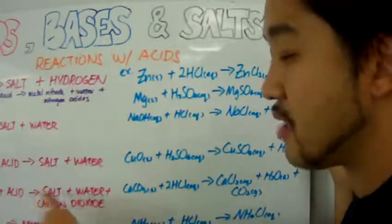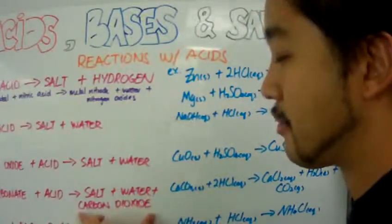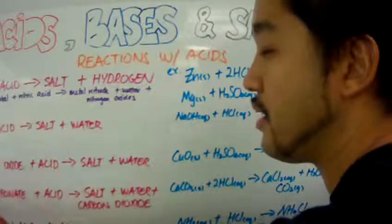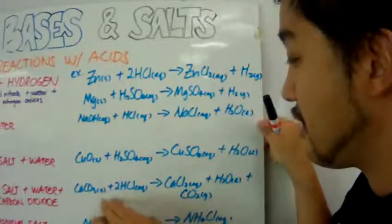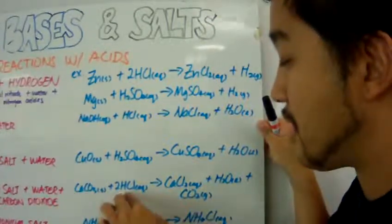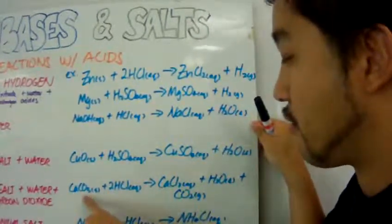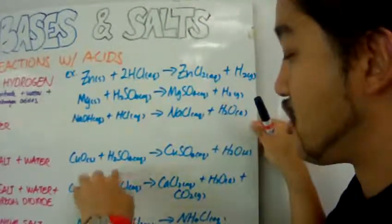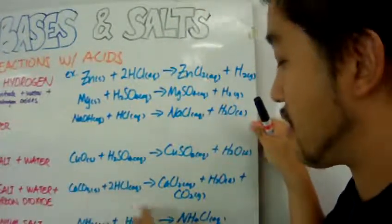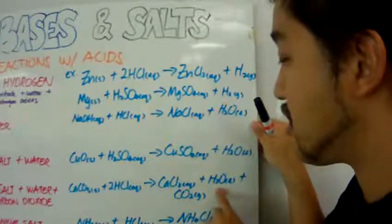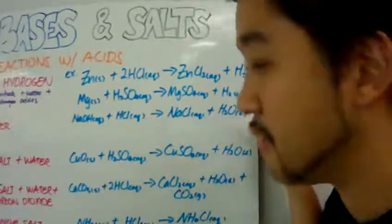Metal carbonate with acid, you get salt, water, and carbon dioxide. The carbonate will decompose into water and carbon dioxide, and the metal will involve a displacement reaction. So here you have calcium carbonate with hydrochloric acid. Calcium will displace the hydrogen to form calcium chloride. The H from here will displace the calcium, and then this carbonate will decompose into CO2. It will bring in oxygen to react with the hydrogen ions from the hydrochloric acid.